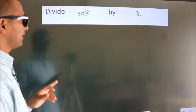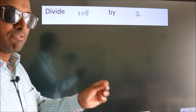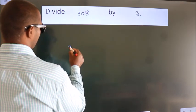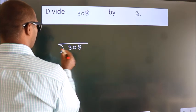Divide 308 by 2. To do this division, we should frame it in this way: 308 here, 2 here.